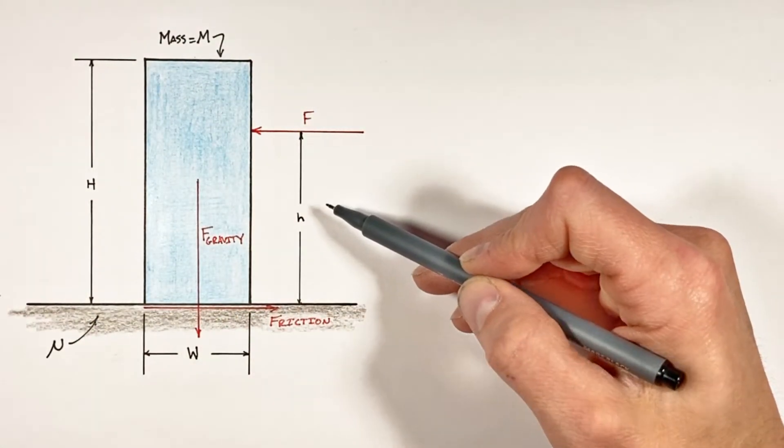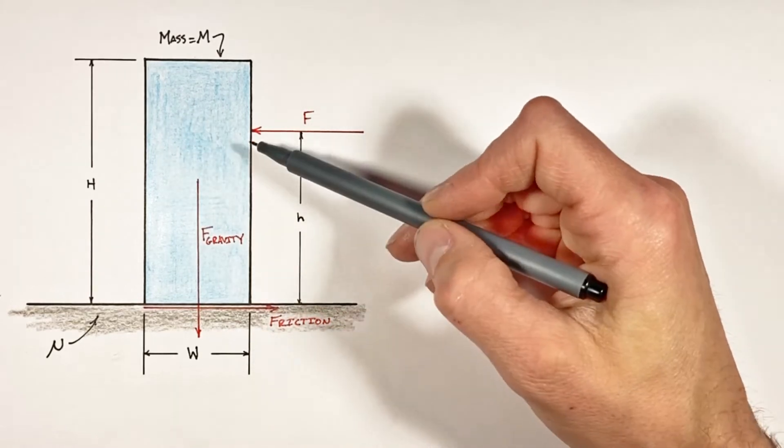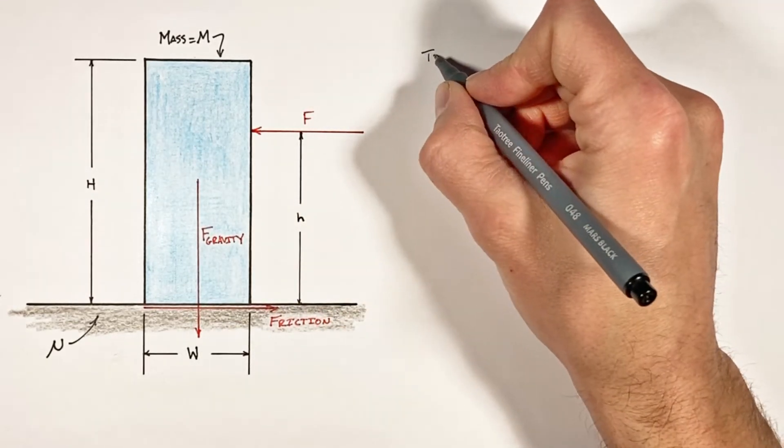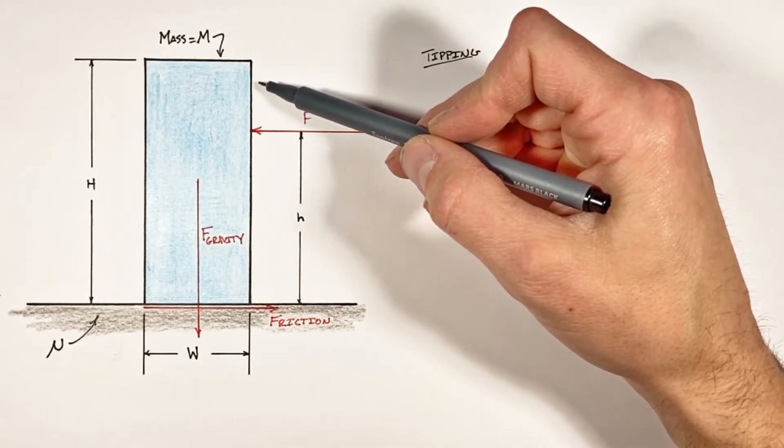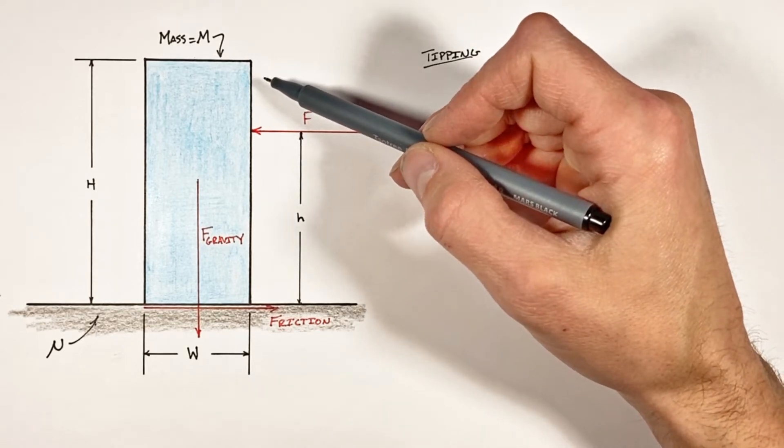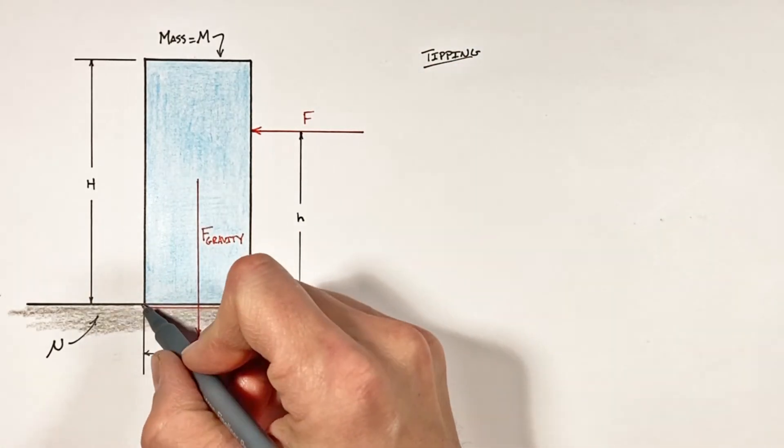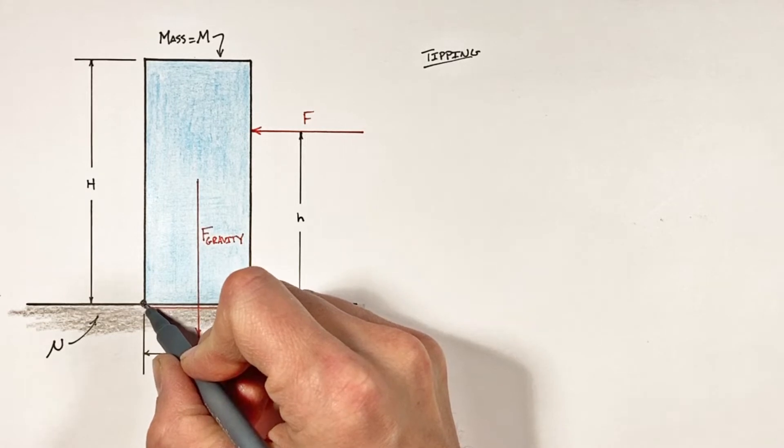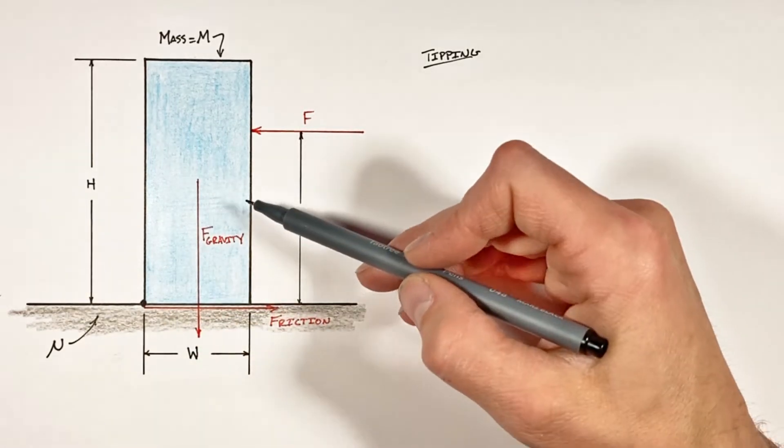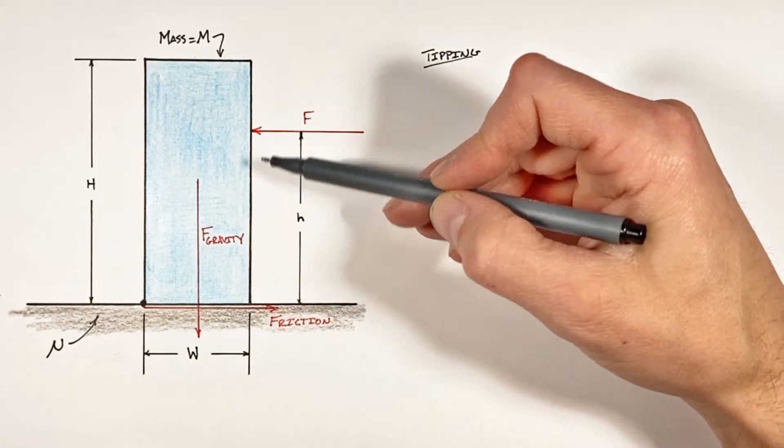Let's look at the physics equations which are going to determine whether this block will tip or slide. So if we're to push on this block high enough, the block would try to tip over and when it tips it's going to pivot around this corner right down here. Now right at that transition as it goes from sliding to tipping, the sum of all torques around this point right here is going to be equal to zero.